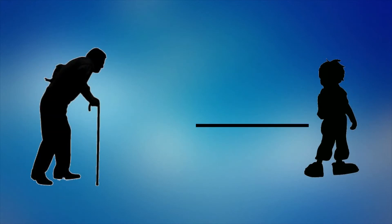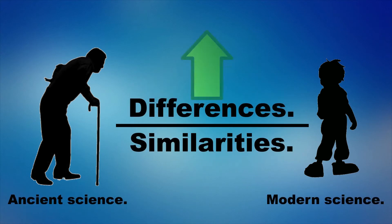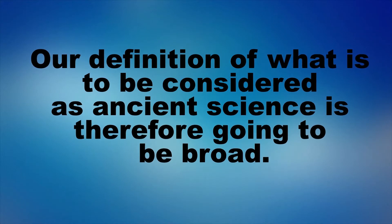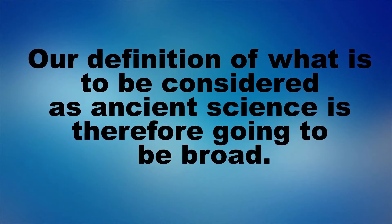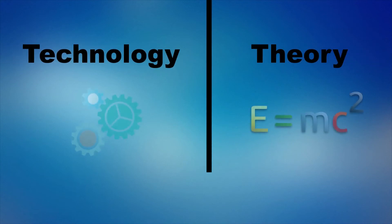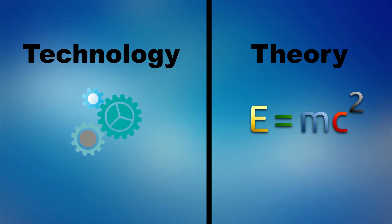Ancient science's relationship to modern science can be thought of as someone's relationship to his or her grandfather. The differences between the two persons might outweigh the similarities, but one is still the other one's descendant. Our definition of what is to be considered ancient science is therefore going to be broad, or at least as broad as that of the historical actors whose intellectual effort we are attempting to understand. One definite distinction will be made though, and that is the distinction between craft and theory, since when we are talking about ancient science we are mainly talking about theories and methods by which they are formulated. Ancient technology does not fit into that description, and will therefore be left out of the series.